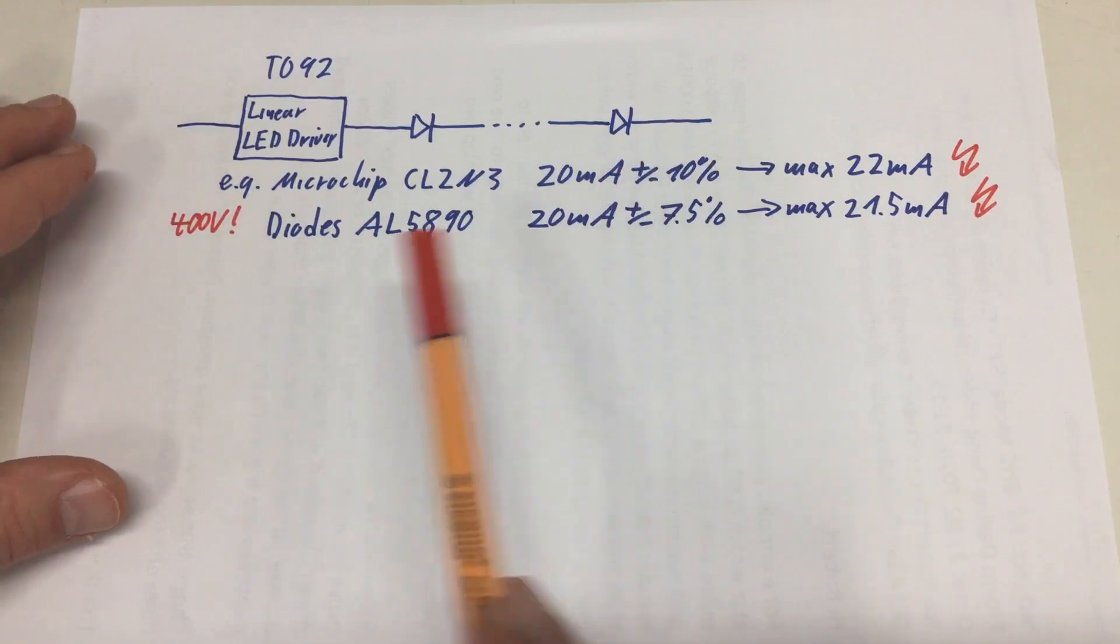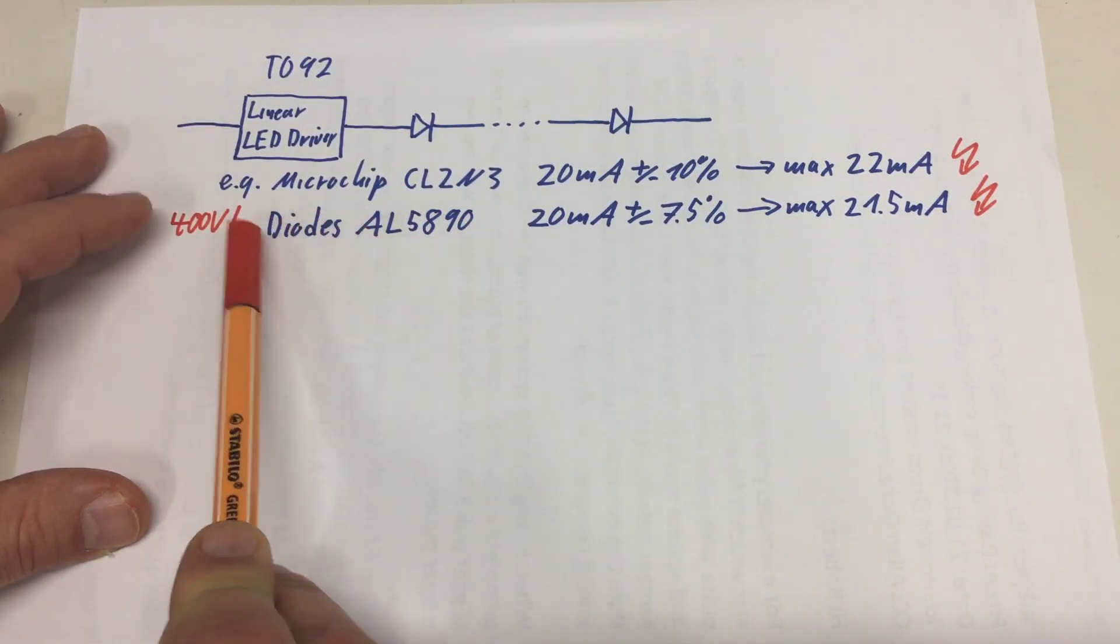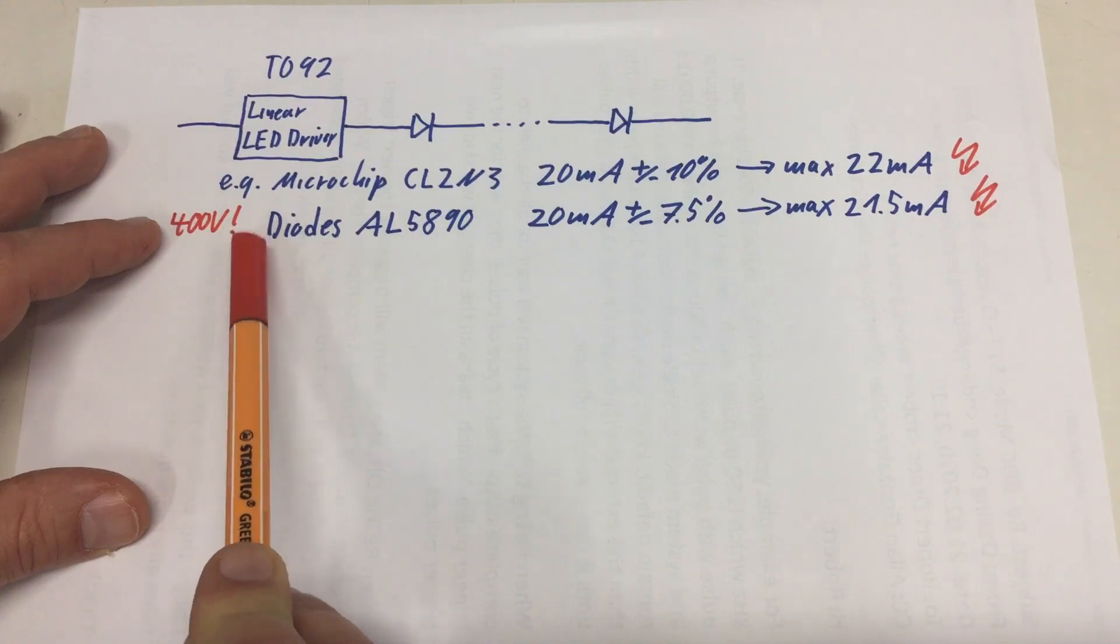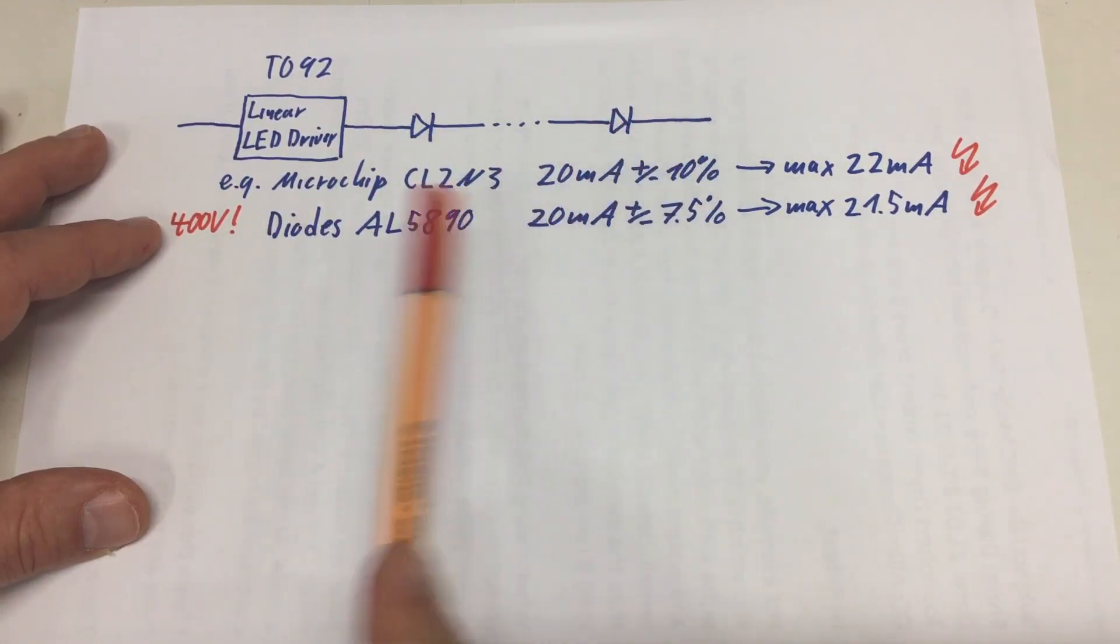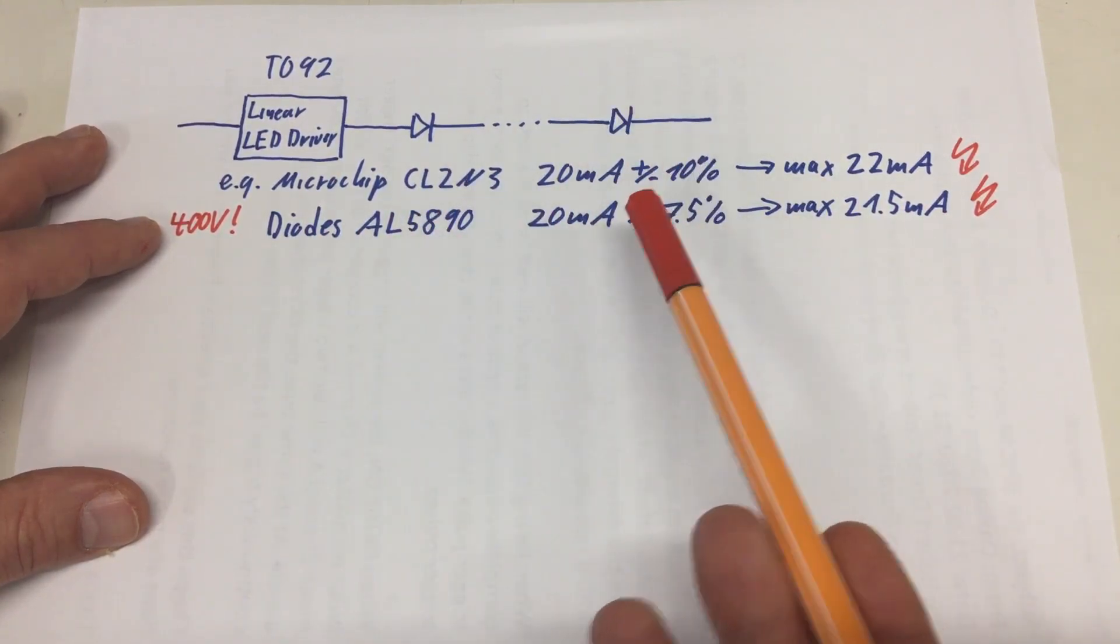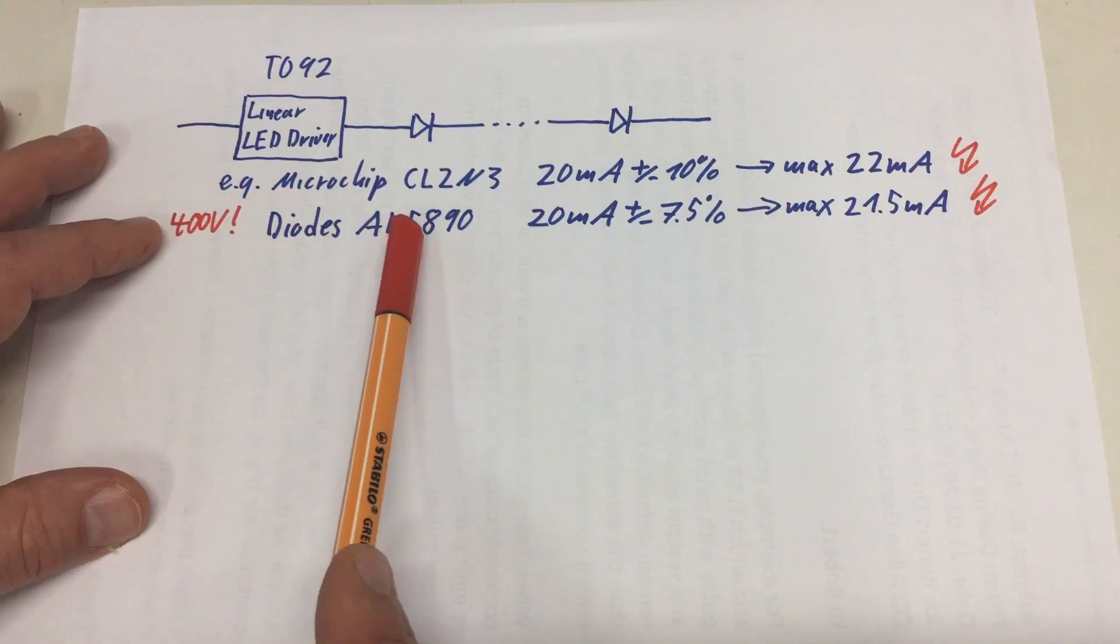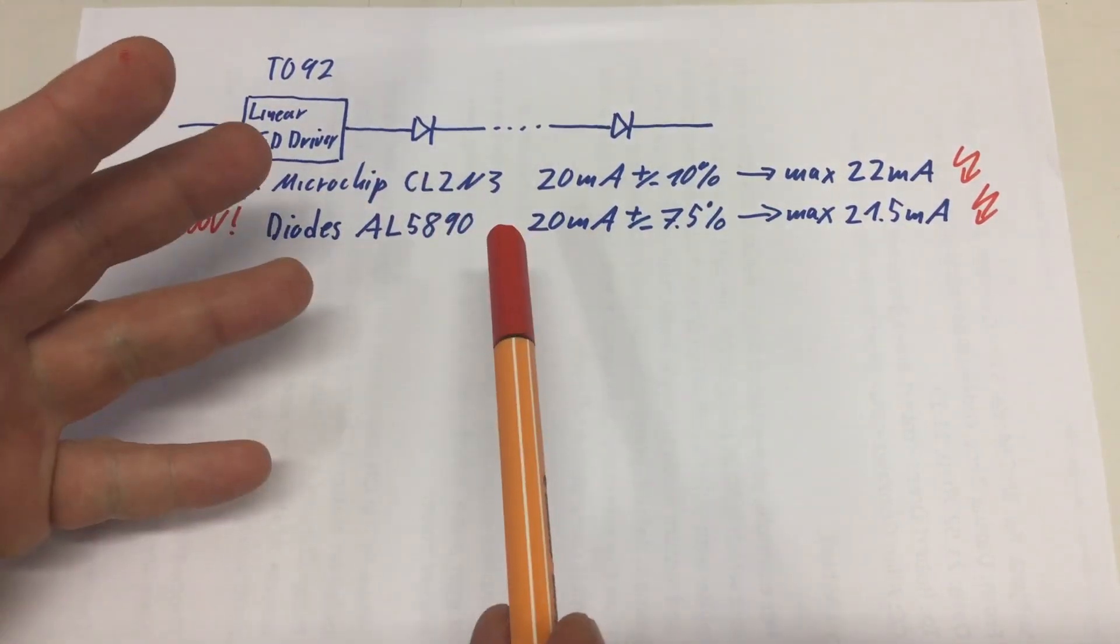One note, that diodes chip can operate up to 400 volts. Just if you want to drive some LED lighting directly from mains AC, that's a nice two pin option to do that.